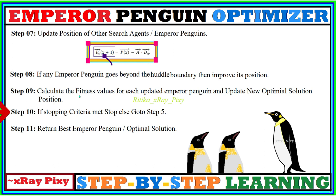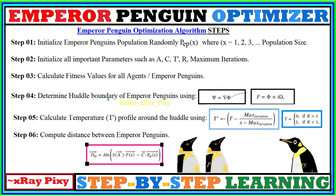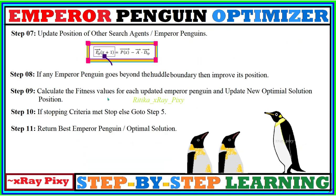Step 10: If the stopping criteria is matched, stop and display the best optimal solution obtained. Otherwise, if the stopping criteria is not matched, go to step 5 and repeat the loop.